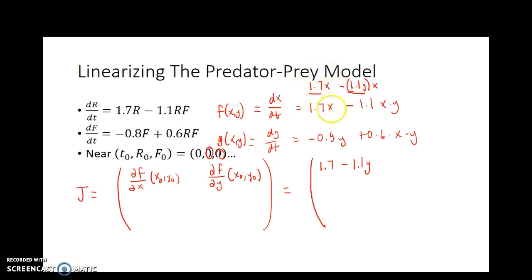And now the derivative of this thing with respect to y treats x as a constant and treats y as the variable. So I have 1.7x is a constant minus 1.1x times y. And so the derivative of a constant is 0 and the derivative of 1.1xy with respect to y will just be minus 1.1x. Now I still need to evaluate these at the initial condition. I haven't done that yet. So this will be at the 0, 0 and this will need to be evaluated at the 0, 0.